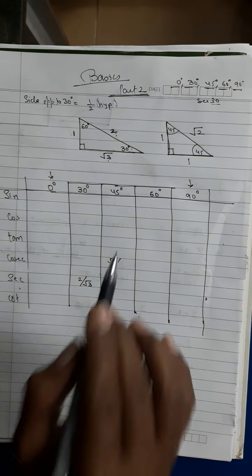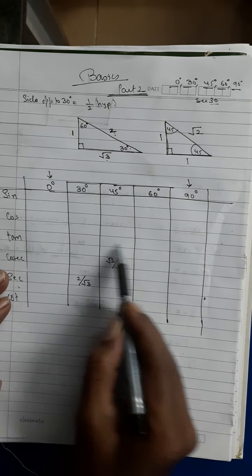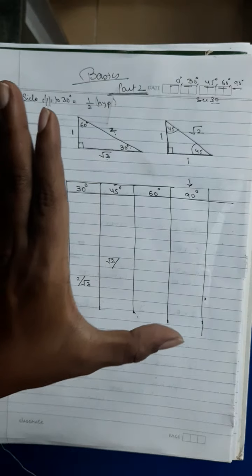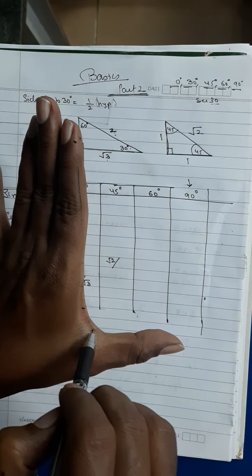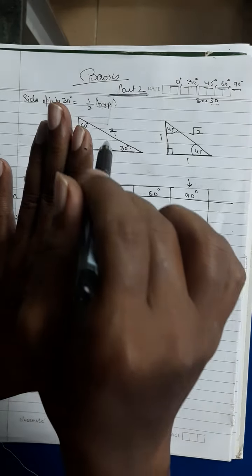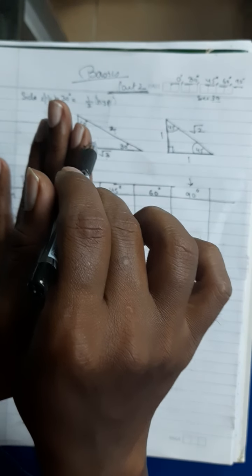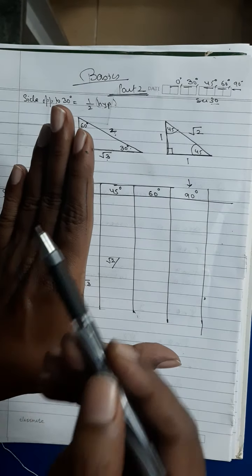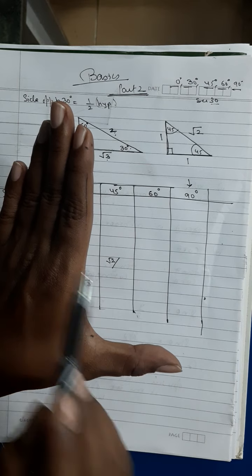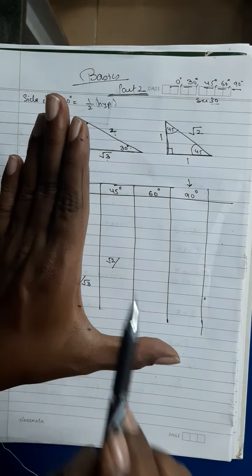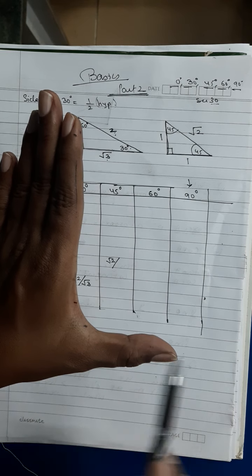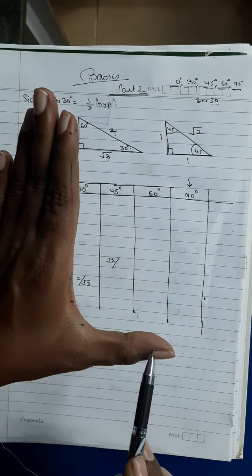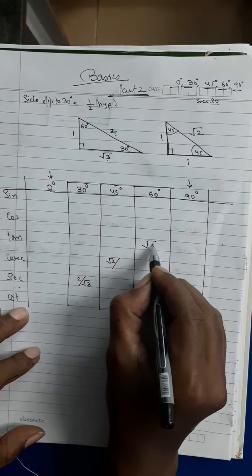Now tan 60: use the 30-60-90 triangle where 60° is at the top. Tan is opposite upon adjacent. For 60°, the opposite side is √3 and the adjacent side is 1. So tan 60 = √3/1 = √3.